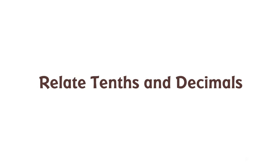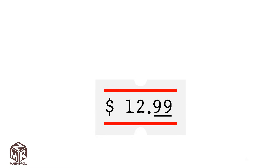Relate tens and decimals. We know what fractions are, but when we go to the store, we don't see fractions — we see decimals. A decimal is a number with one or more digits to the right of the decimal point. You can write tenths and hundredths as fractions or decimals.